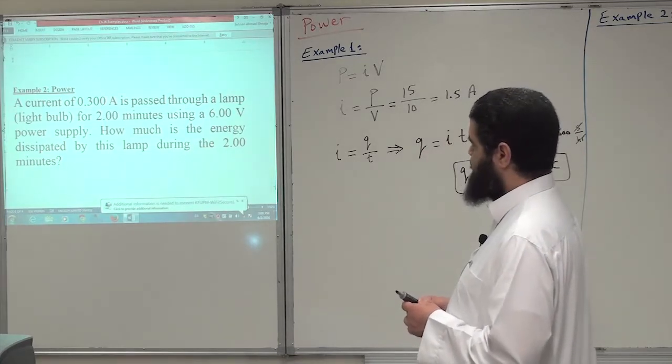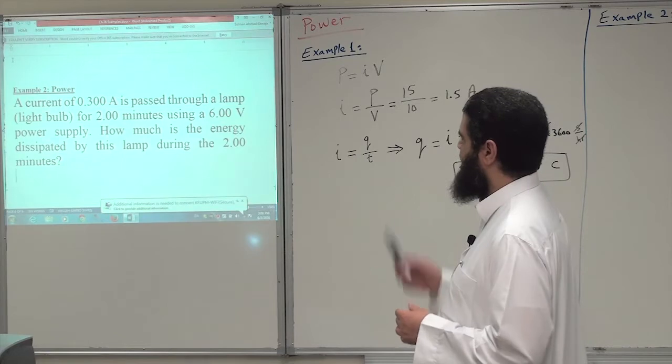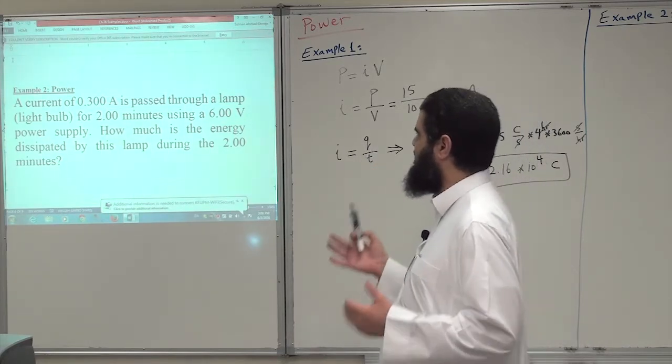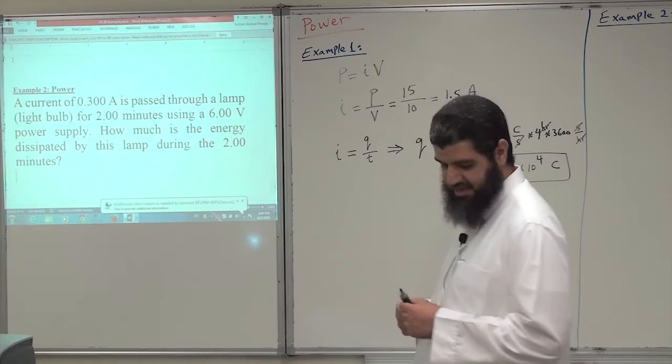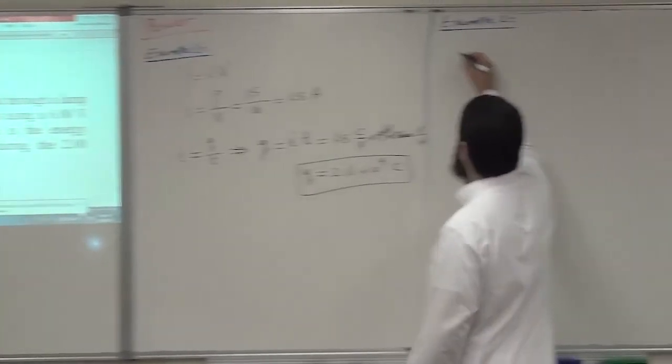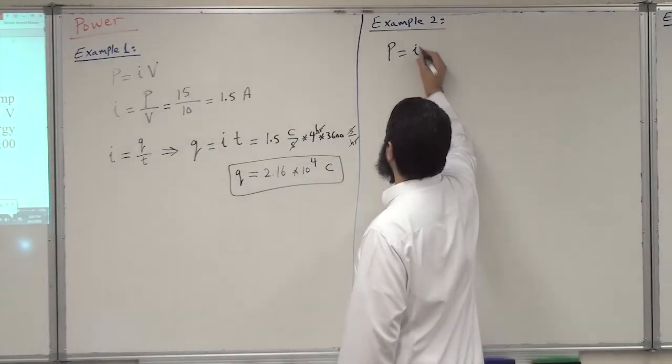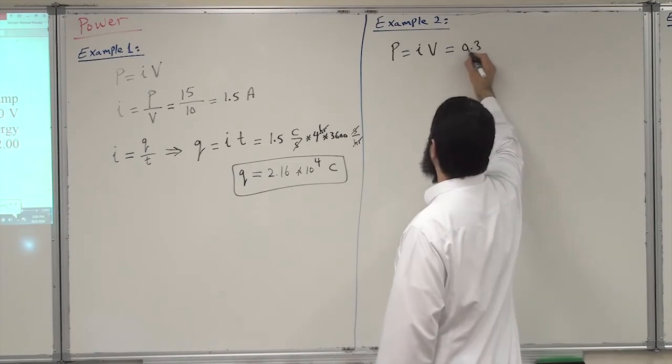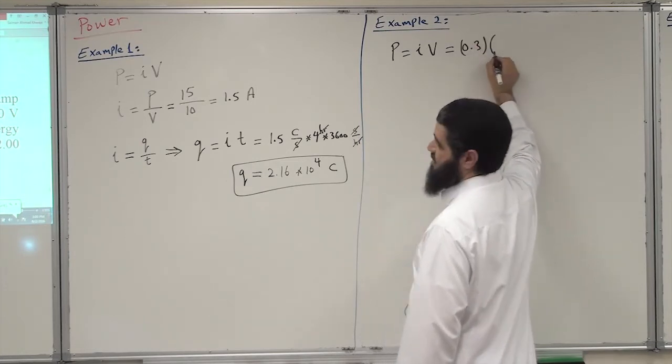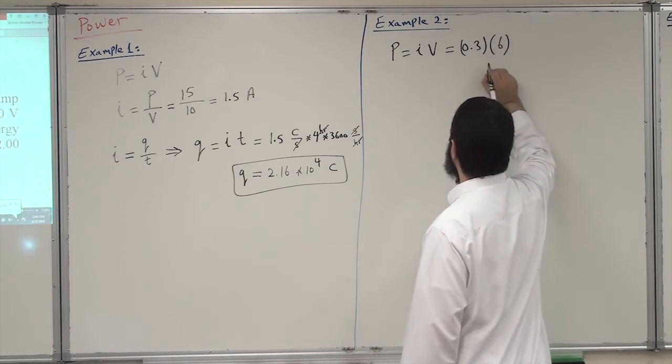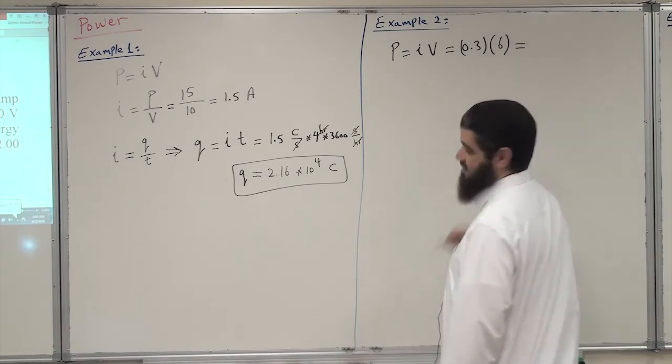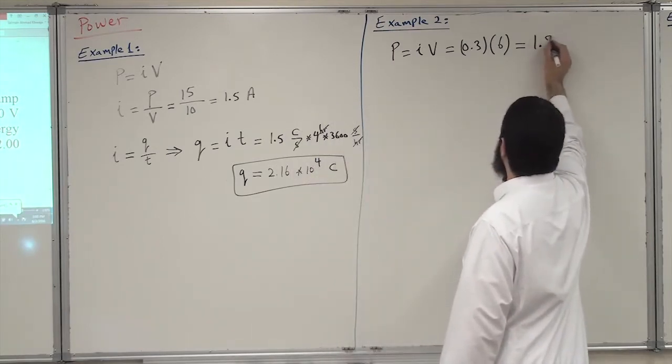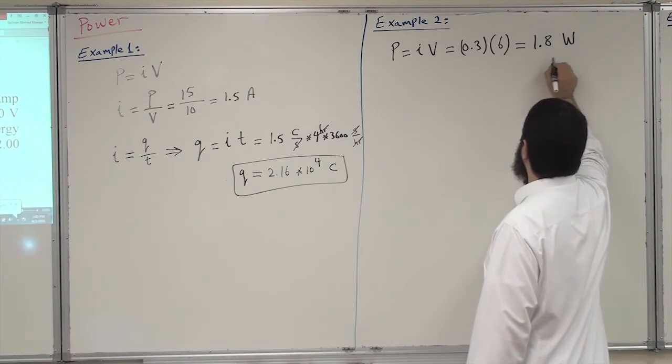So we have the current and we know the voltage. We need to know how much energy is dissipated. The power equals IV. In this case, I is 0.3 amperes multiplied by the voltage, which is 6 volts. This gives us power of 1.8 watts, a very weak device.